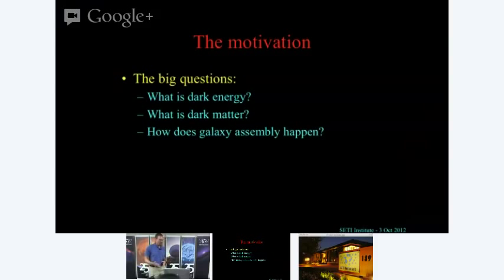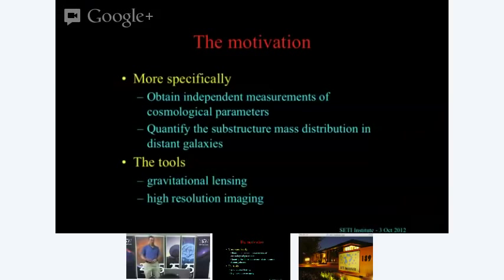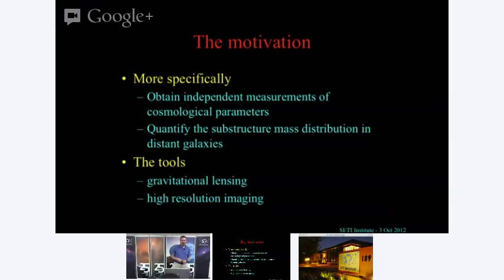The really big questions underlying my work are: What is dark energy — this mysterious thing causing the expansion of the universe to accelerate? What is dark matter? And how do galaxies get put together? That's grandiose, so more specifically: one goal is to obtain measurements of cosmological parameters including those describing dark energy using a technique different from standard approaches. Another is to look at how mass is distributed in galaxies, particularly something called substructure — little blobs of mass associated with big massive galaxies.